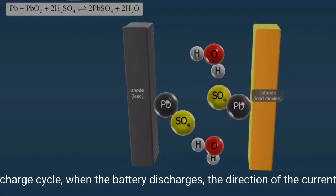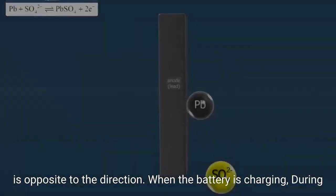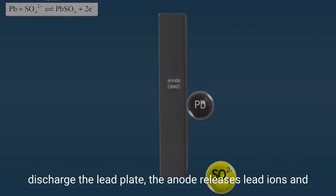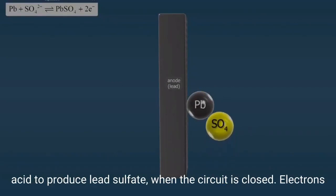When the battery discharges, the direction of the current is opposite to the direction when the battery is charging. During discharge, the lead plate (the anode) releases lead ions and two electrons are formed. The lead ions react with sulfuric acid to produce lead sulfate.